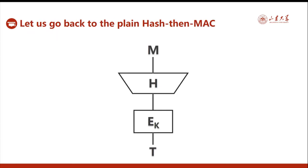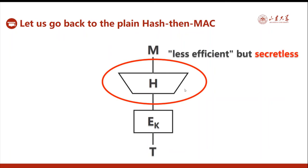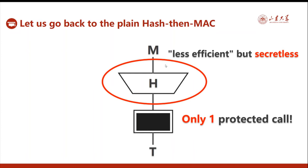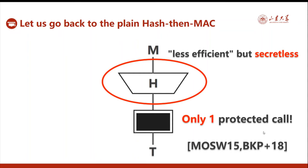For something better, we revisit the hash-then-MAC scheme using collision-resistant hashing. Collision-resistant hashing is less efficient, but it is keyless — it has no secret. We therefore do not need to protect anything about the hash execution. We only need to protect the block cipher call, meaning only one keyed operation in the entire computation flow needs side-channel protection. This is much more efficient than block cipher-based or universal hashing-based designs, and unsurprisingly it was adopted in previous work on leakage-resilient MACs and authenticated encryption.